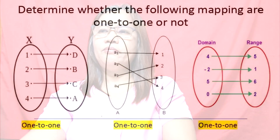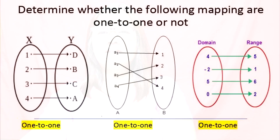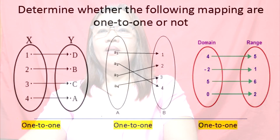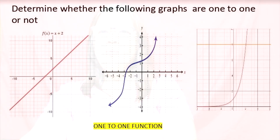Now let's try to determine whether the following mappings are one-to-one or not. The first mapping diagram is one-to-one, the second one is one-to-one, and the third one is also one-to-one. Now let's determine whether the following graphs are one-to-one or not. The first graph — the answer is one-to-one. The third graph — yes, the answer is one-to-one. So all of these are one-to-one functions.